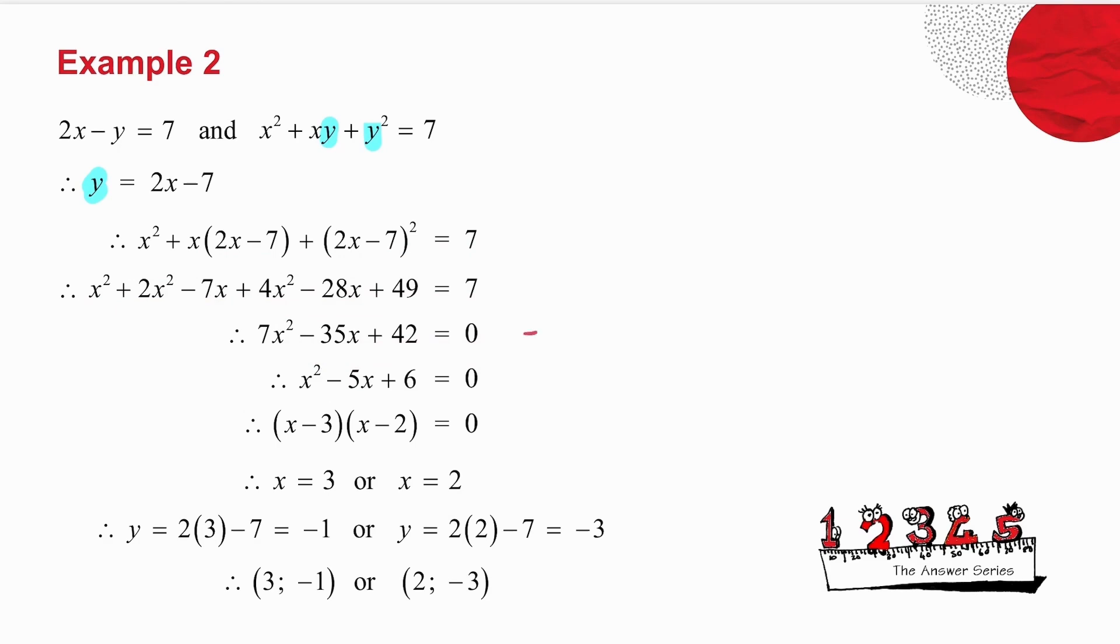I notice I can divide through by 7, which will make my quadratic much simpler. I then factorize, and I get my two values for x.